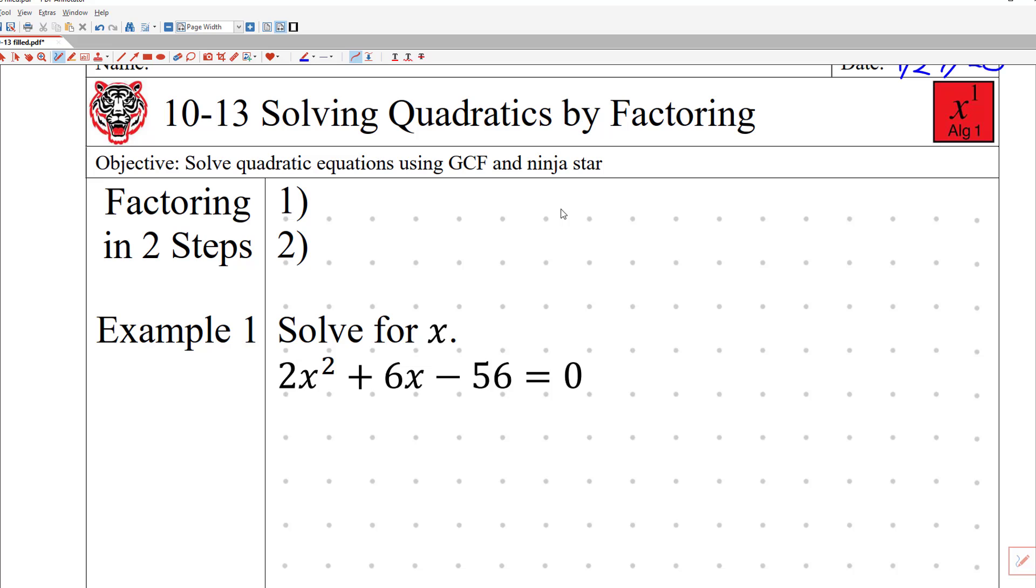It's basically the same thing that we did in 10-12, but now thrown in the GCF. Remember, there are always two steps when you're solving quadratics. The first step is to factor out the GCF, so I'm just going to write GCF for our notes. And then technically step two is advanced ninja star, although all of today's lesson is just going to be normal ninja star.